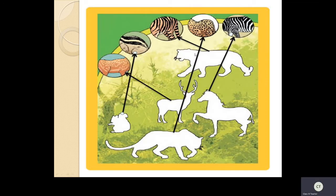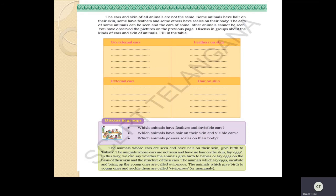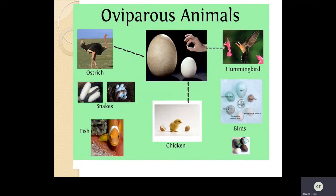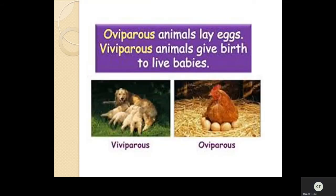See these arrow marks - cheetah, tiger, zebra, deer, squirrel. The patterns of the skin are due to hairs on their body. Just before this class we studied about oviparous and viviparous. 'Ova' means egg, so egg-laying animals are called oviparous animals. Animals which give direct birth to babies are called viviparous animals. Oviparous animals lay eggs, and when the eggs hatch, the young ones come out.